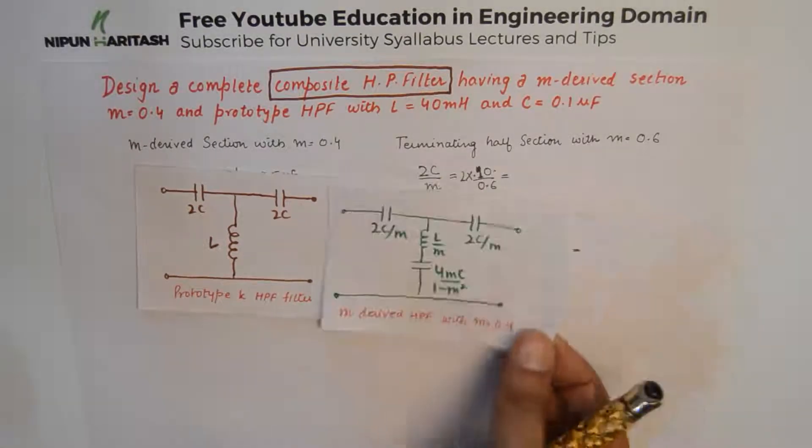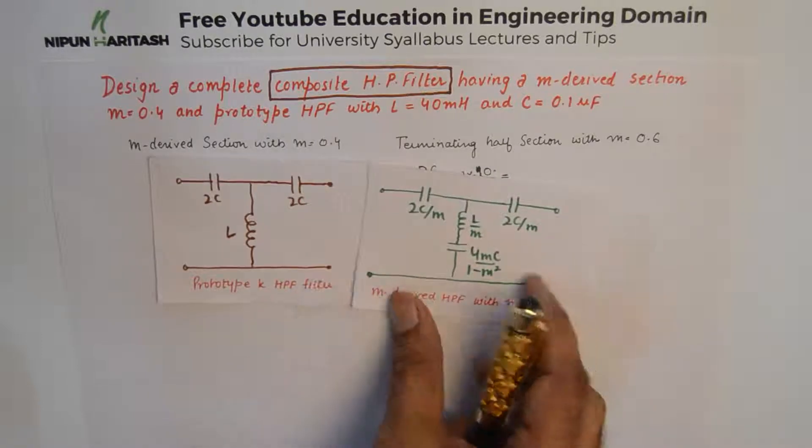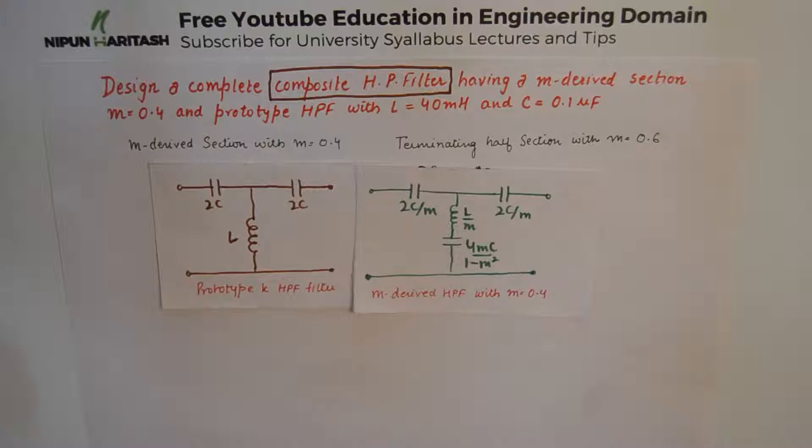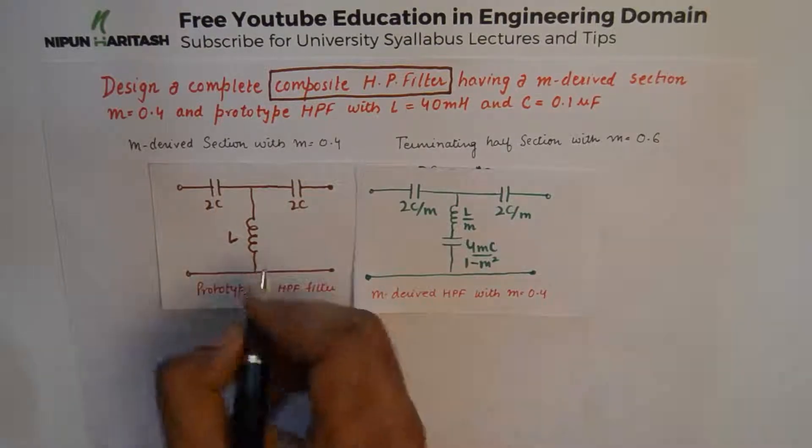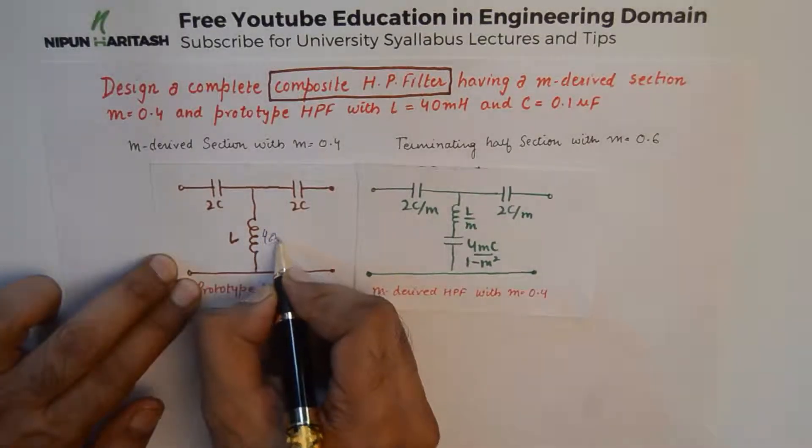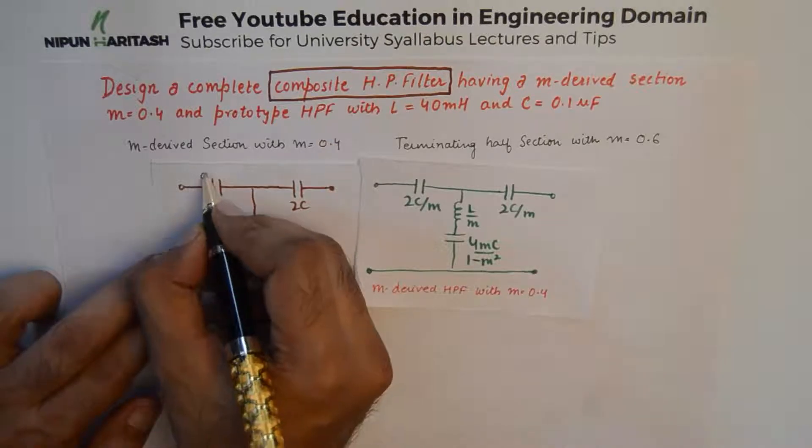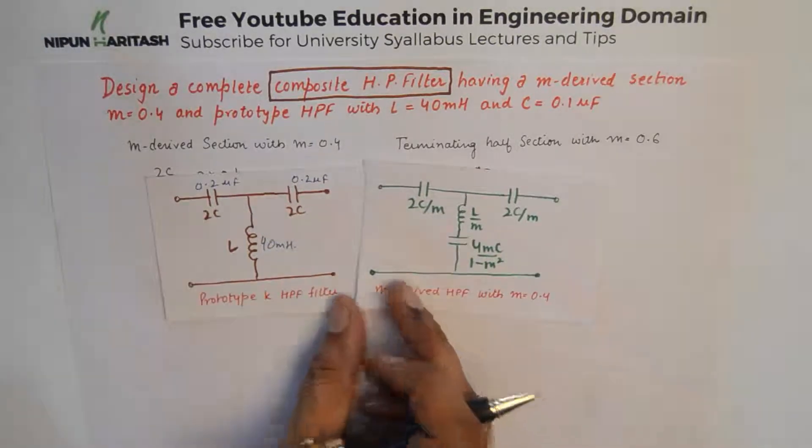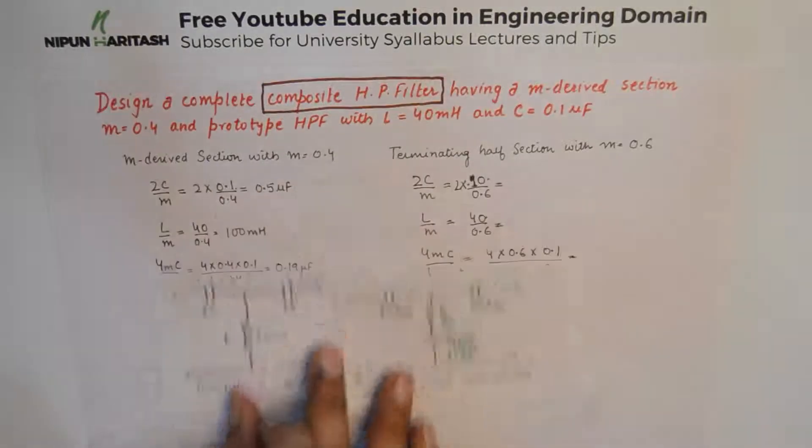First we'll design the prototype K high pass filter. It is easier to design because in this particular question the values of L and C are directly given. In other questions you might be given the values of K and cutoff frequency, from which you can find L and C. So I'll mark this value as 40 millihenry, and this will become 0.2 microfarad. This part is done, the first part is done pretty easily.